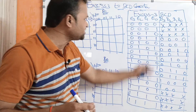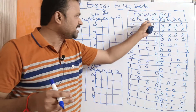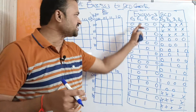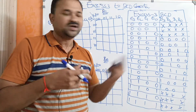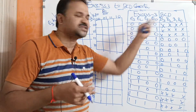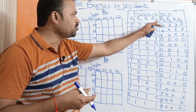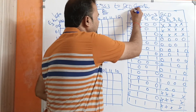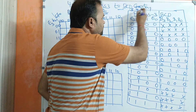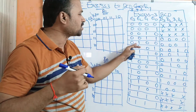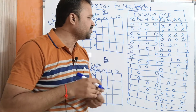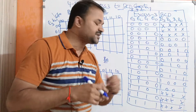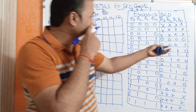So let us see the combinations here. Totally the number has 4 bits, so we have 16 combinations from 0 to 15. Simply we use 8421 notation. So 0 means all zeros, 1 means 0001, 4 means 0100, 10 means 1010, 15 means all ones. First, let us calculate BCD for 0.